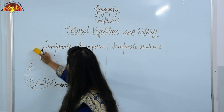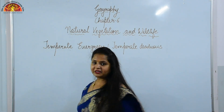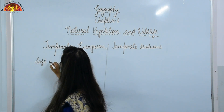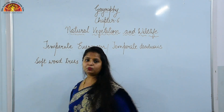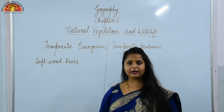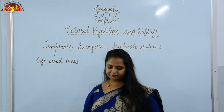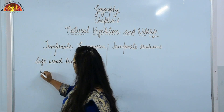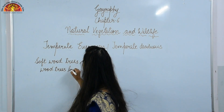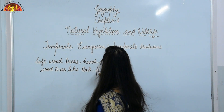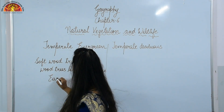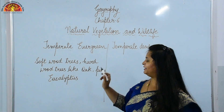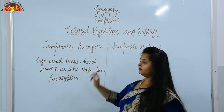Temperate evergreen forests are generally found in the mid-latitudinal zones. They comprise both hard and soft wood trees like oak, pine, and eucalyptus. Both softwood and hardwood trees are found in temperate evergreen forests.